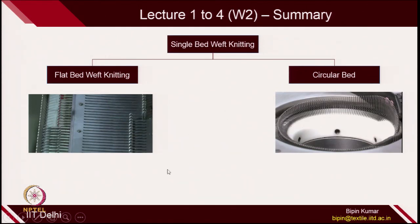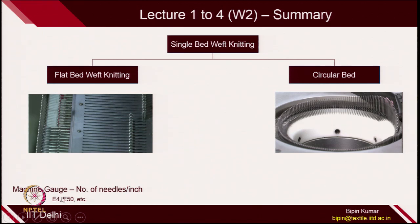We also covered some of the technological machines related to single bed weft knitting. We covered 2 types: flatbed weft knitting, where needles are placed on a flat bed in the tricks, and circular bed, where the needles are placed on tricks created on a cylindrical platform. Machine gauge is also an important parameter which decides how closely the needles are placed on the bed. Number of needles per inch is defined as the machine gauge — for example, E4 means 4 needles per inch, E50 means 50 needles per inch. More needles per unit length means a finer fabric.